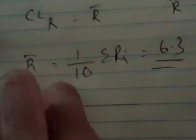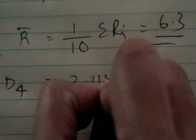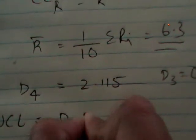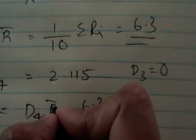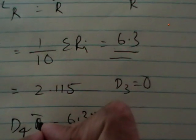Here, D4 is given to you 2.115 and D3 is given to you 0. Then UCL will be D4 R bar which is nothing but 6.3 into 2.115, which is 13.32. LCL of R is nothing but D3 R bar which is nothing but 0 as D3 is 0. CL R is nothing but 6.3.